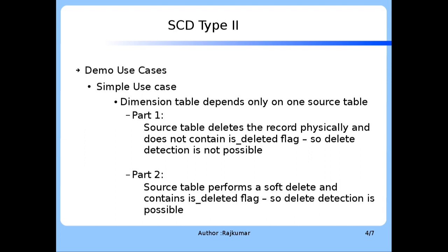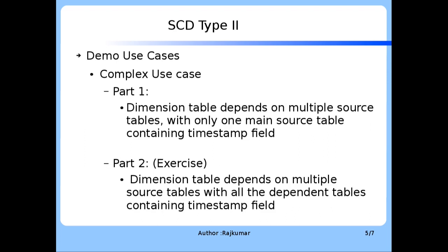As part of Part 2, we will see the source table is deleted with the record but it has a flag named as 'is deleted' to mark the deleted record. In this case, the delete detection would be possible as part of this SCD Type 2 handling. Then moving on to the complex use case, we have two parts again. The first part indicates the dimension table depends on multiple source tables, however only one source table contains a timestamp field, whereas the other source table doesn't have a timestamp field.